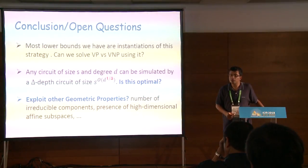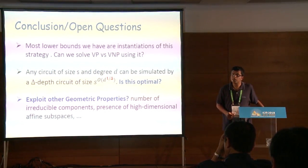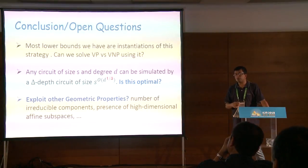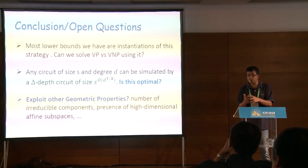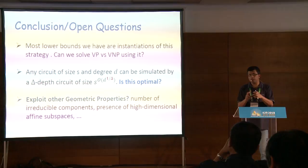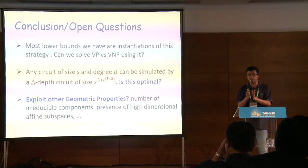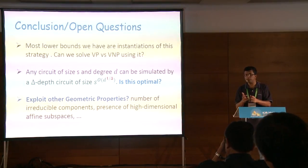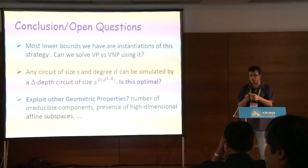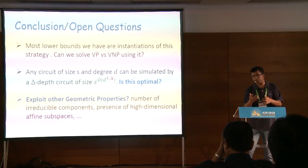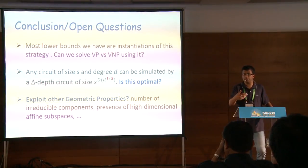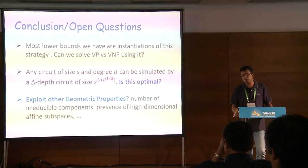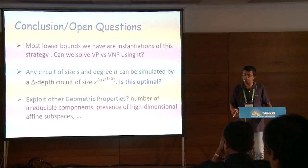Question: What do you mean by almost orthogonal columns? Answer: The inner product of any two columns should be much smaller compared to their L2 norm. If all columns have L2 norm 1, I want the inner product of any two columns to have magnitude at most epsilon, and depending on epsilon I get a bound on the rank of the matrix.